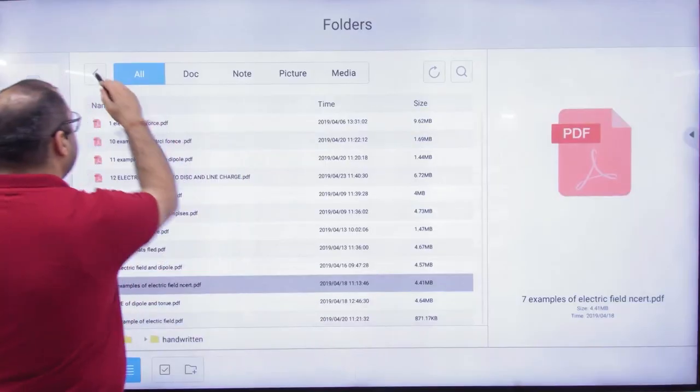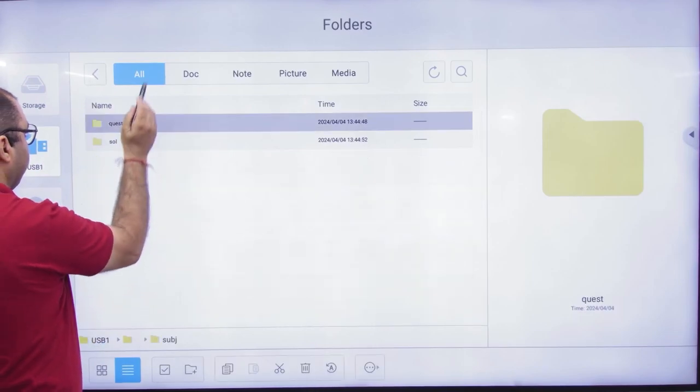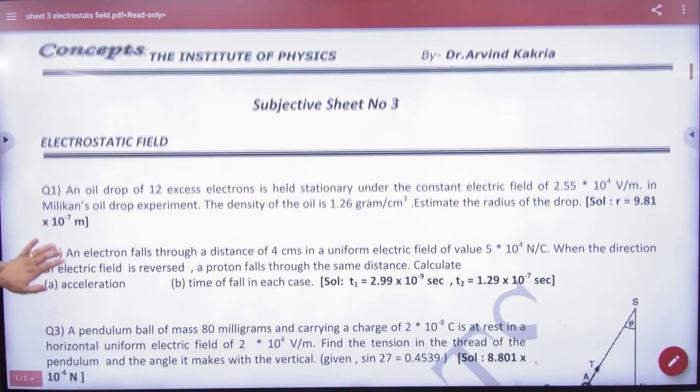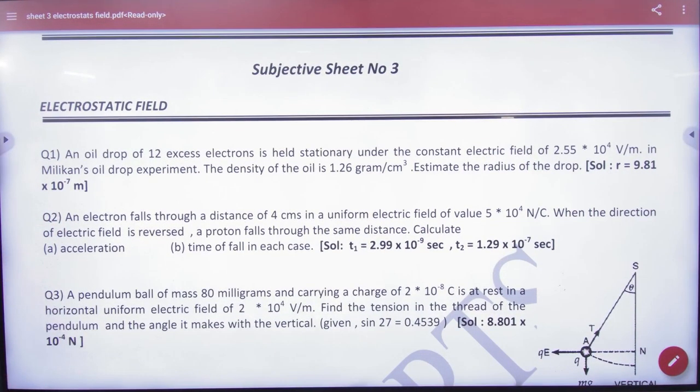Okay. One sheet, this is the subjective sheet number 3 given you. That's it. Question number one. Let's start with this sheet, first I will tell you some important points, which will be a lot of work in the ElectroStats.